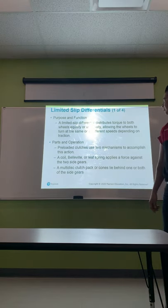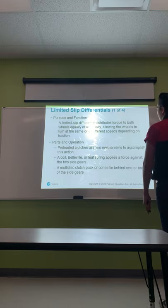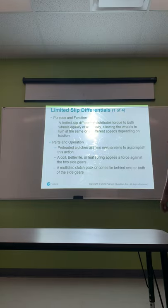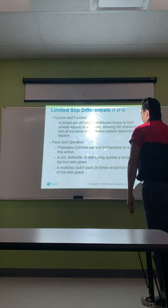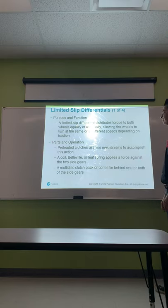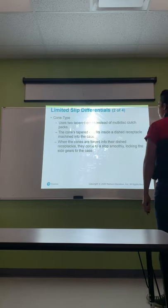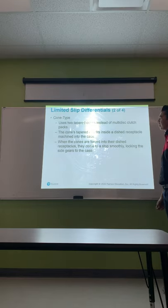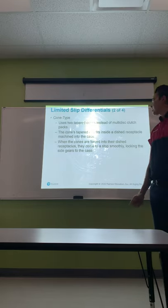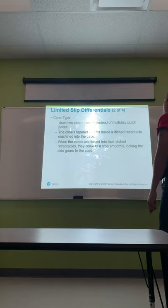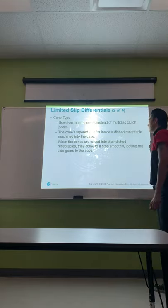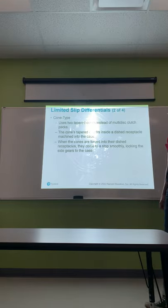A limited slip differential distributes torque to both wheels equally or unequally, allowing the wheels to turn at the same or different speeds depending on traction. Preloaded clutches use two mechanisms: a coiled or leaf spring applies force against the two side gears, and a multi-disc clutch pack or cones lie behind one or both of the side gears. The cone type uses two tapered cones instead of multi-disc clutch packs — the cone's tapered end fits inside a dish receptacle machined into the case.